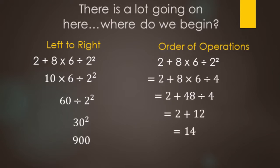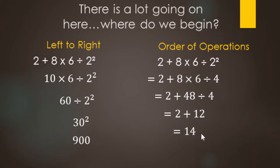Using order of operations, we start with exponents: change the two squared to a four. Now multiply and divide from left to right — the two plus stays, eight times six makes 48, then 48 divided by four makes 12. Last, we finish with addition or subtraction: two plus 12 makes 14. So this is the correct way of doing it.